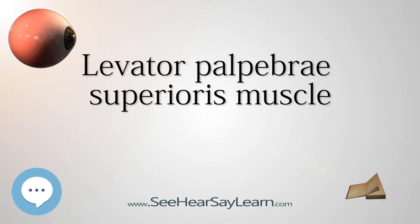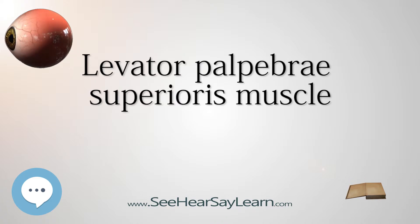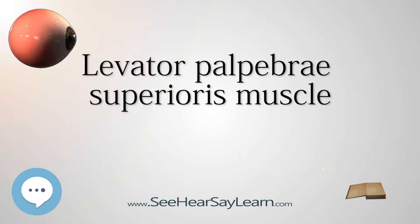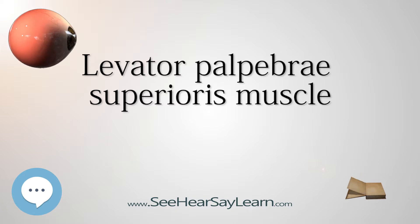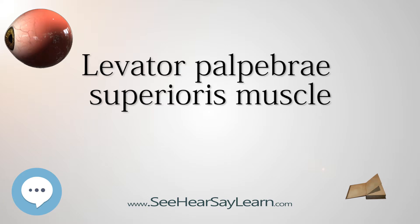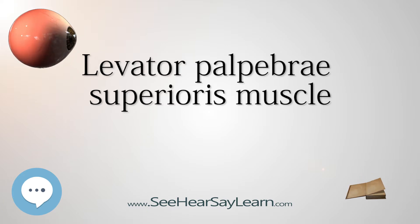Nerve Supply: As with most of the muscles of the orbit, the levator palpebrae receives somatic motor input from the ipsilateral superior division of the oculomotor nerve. An adjoining smooth muscle, the superior tarsal muscle, which is occasionally confused to be a portion of the levator palpebrae superioris, is actually only attached, and is separately innervated by sympathetic fibers that originate in the cervical spinal cord.